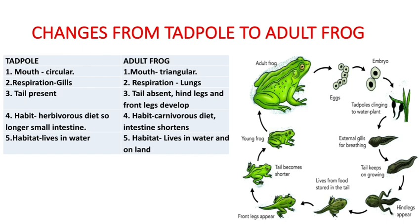In the tadpole, hind legs develop first, then front legs develop. The tadpole has a herbivorous diet — it eats algae — but the adult frog has a carnivorous diet. Animals with a herbivorous diet have a longer small intestine, but because the adult frog is carnivorous, its small intestine becomes shortened. The tadpole lives only in water, while the adult frog can live both in water and on land. These are the various changes — you can arrange them in sequential form.